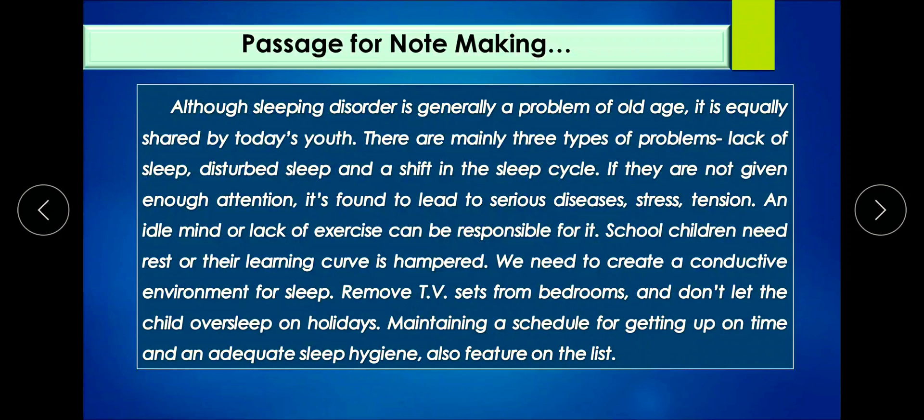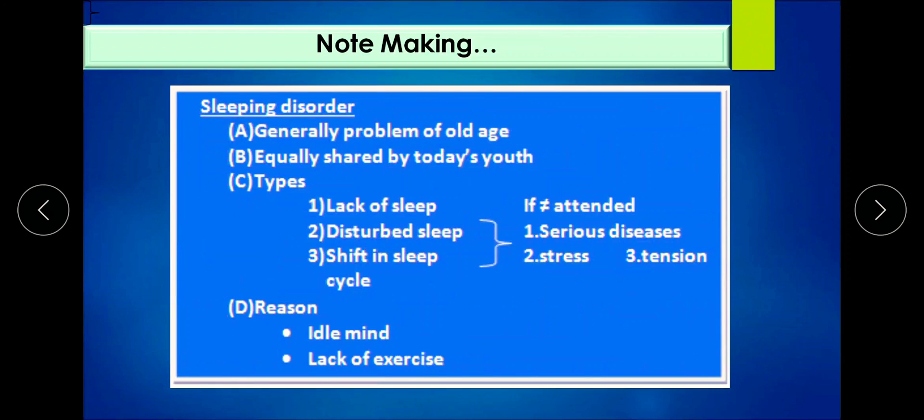Now let's do the same passage through note-making. Here is our heading: sleeping disorder. A, B, C, D - these are our sub-headings. First, generally problem of old age. Second, equally shared by today's youth. Third point, types: lack of sleep, disturbed sleep, shift in sleep cycle. The fourth point is reason.